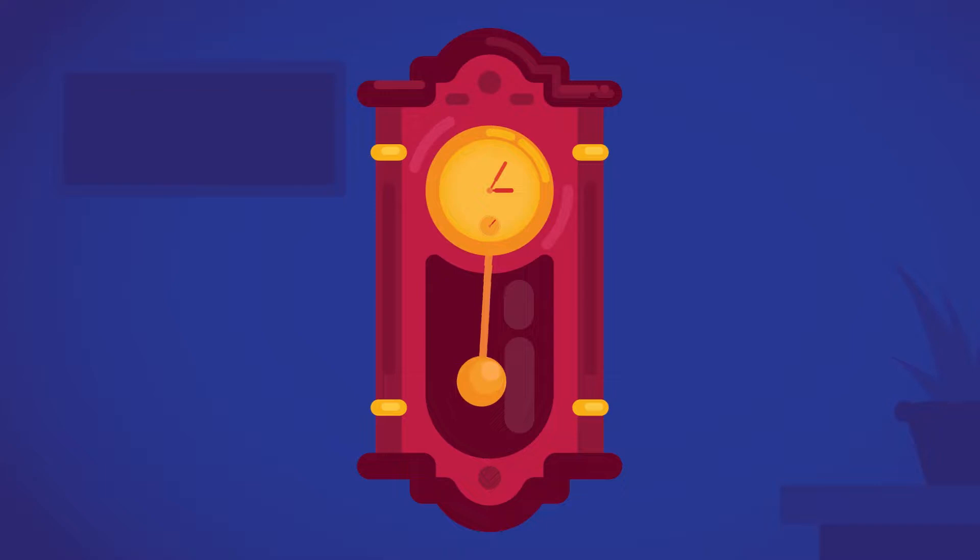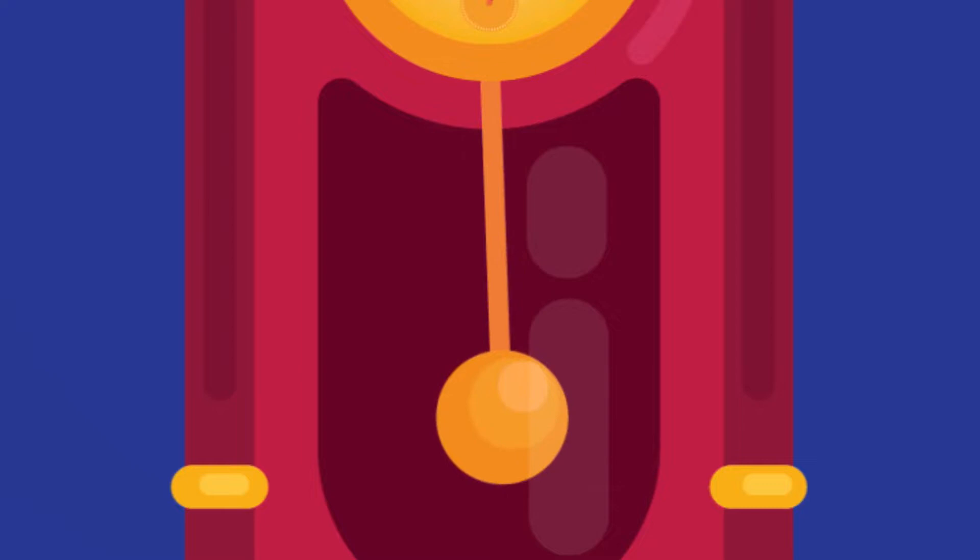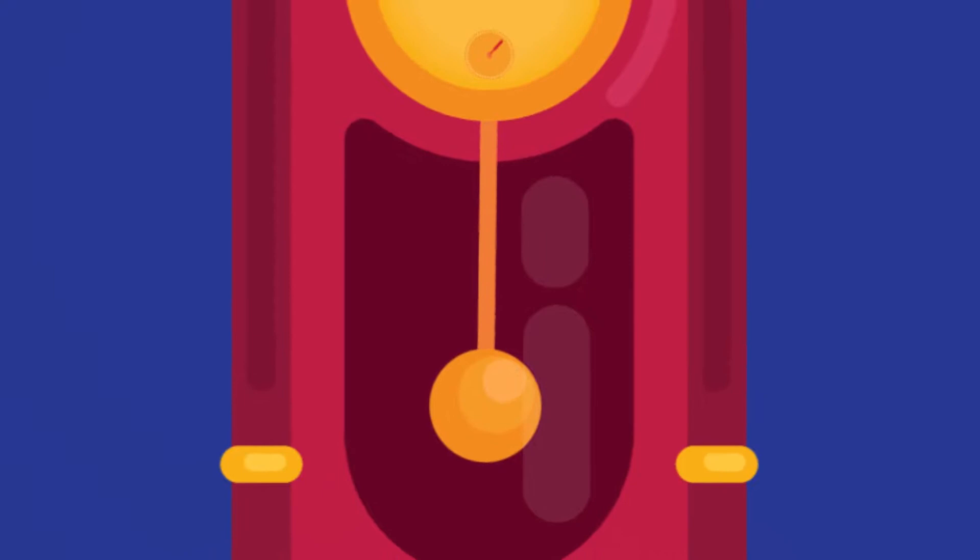A pendulum clock tells time using a pendulum, a swinging weight that provides harmonic oscillation by swinging back and forth in a precise time interval, dependent on its length.